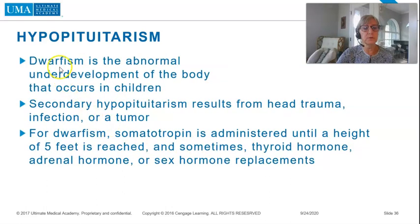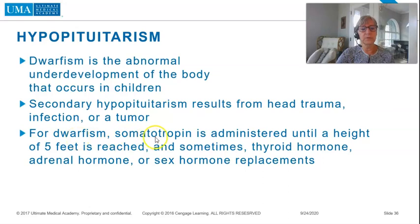Dwarfism is the abnormal underdevelopment of the body that occurs in children. Secondary hypopituitarism results from head trauma, infection, or a tumor. For dwarfism, somatotropin is administered until a height of 5 feet is reached, and sometimes thyroid hormone, adrenal hormone, or sex hormone replacements are used.